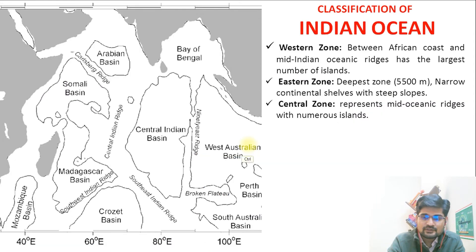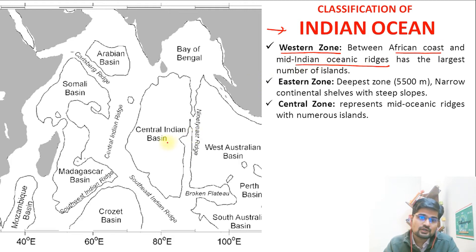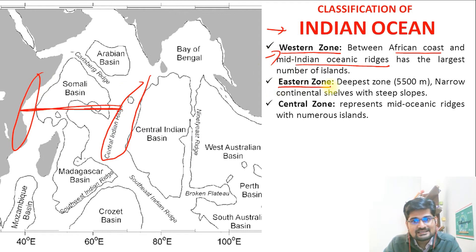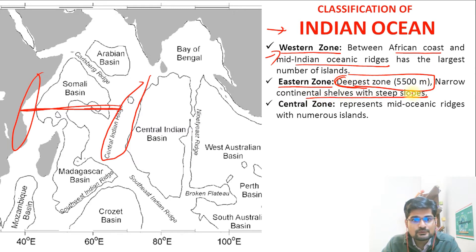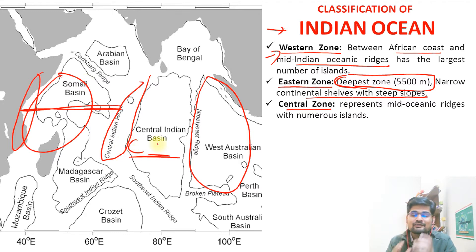The Indian Ocean's ridge and basin structure is classified into three zones. The western zone lies between the African coast and the mid-Indian Oceanic Ridge. The eastern zone is the deepest — about 5500 meters — with a narrow continental shelf and steep slopes. The central zone represents mid-oceanic ridges with numerous islands, very similar to the classification used for the Pacific Ocean.